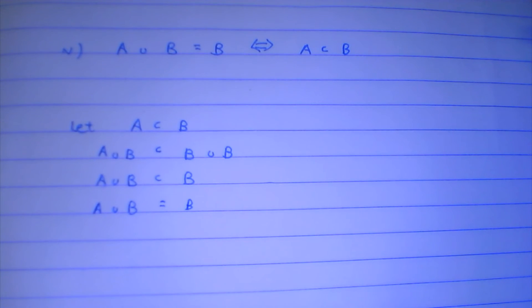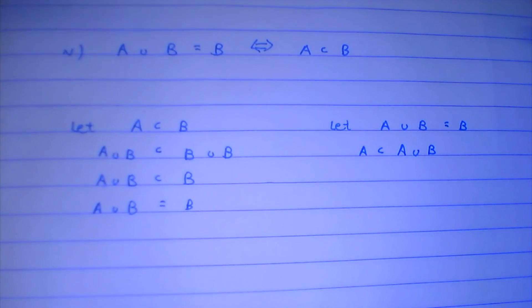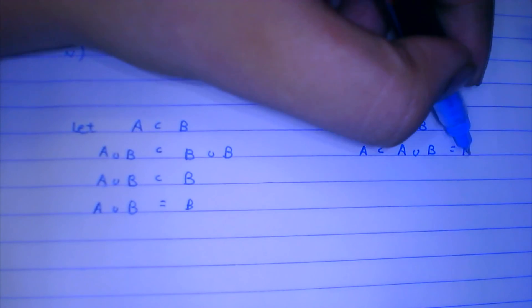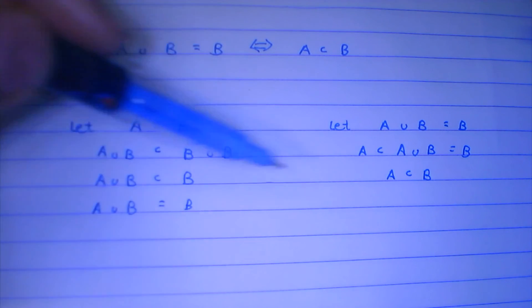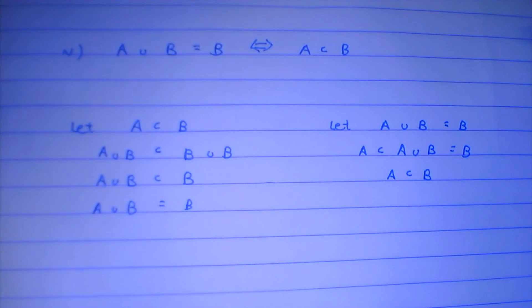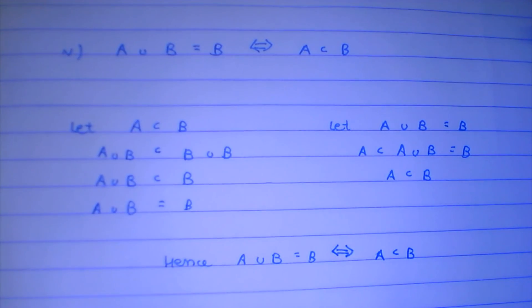Now for the second part, we assume that A union B is equal to B. From this we can see that A is a subset of A union B, and since A union B equals B, A is a subset of B. So starting from A subset of B we derived A union B equals B, and starting from A union B equals B we derived A subset of B. This means A union B equals B if and only if A is a subset of B. Thank you.